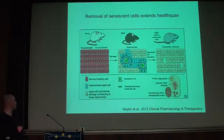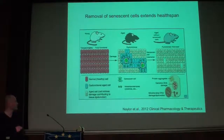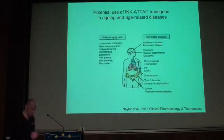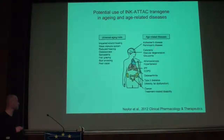In summary, a young animal has fully functional tissues and organs. During aging, damage causes senescent cells to accumulate. These senescent cells secrete cytokines, growth factors, and proteases, making tissue dysfunctional. After senescent cell clearance, these animals still age, but their tissues remain somewhat functional. Several universal age-related diseases are potentially of interest for the INK-ATTAC transgene, because at sites of pathology in all these diseases, senescent cells are known to be present.